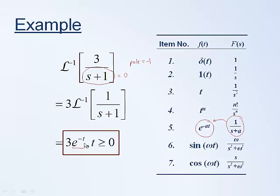The real part of the pole tells us the rate of decay or growth. The fact that we have a negative real part of minus 1 shows a rate of decay of minus 1. The imaginary part is zero, meaning we will have no oscillation — no sine or cosine term. This is exactly what we should have expected.